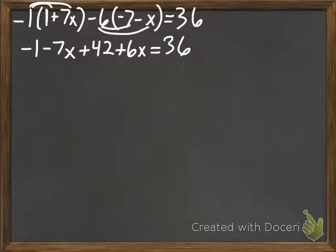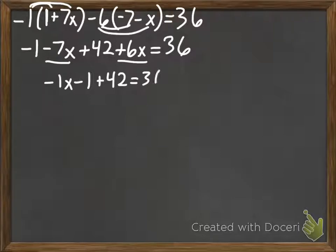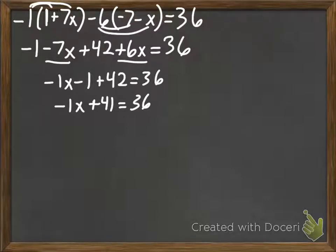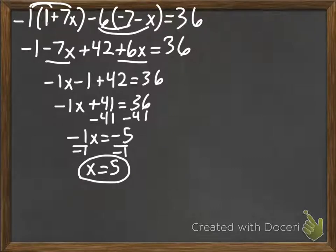Now we're going to combine like terms. With the x terms: negative 7x plus 6x gives negative 1x. Then we have minus 1 plus 42 equals 36. Combining the numbers: negative 1 plus 42 is positive 41, so negative 1x plus 41 equals 36. We subtract 41 to get negative 1x equals negative 5, then divide by negative 1 to get x equals positive 5. That's our final answer.